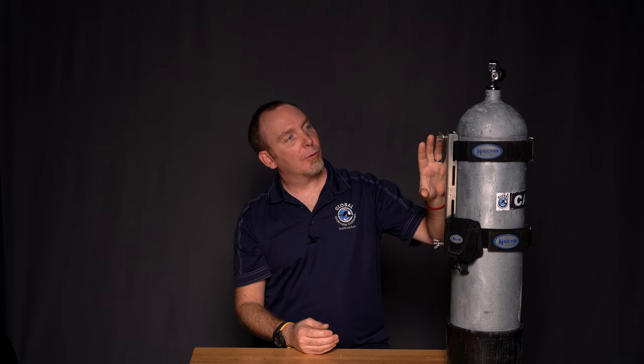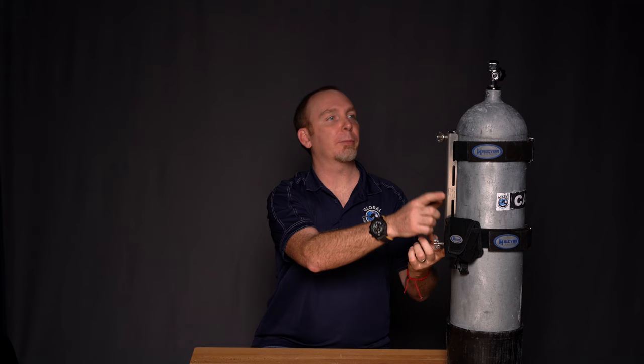To recap, when attaching a single tank to a backplate and wing, start by having the STA in line with where the shoulder becomes the wall of your tank, and then adjust from there.